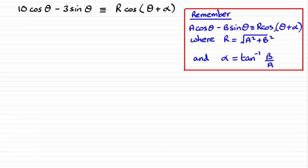...when it can be written in this form, R is the square root of A² plus B², and α is the inverse tan of B over A.